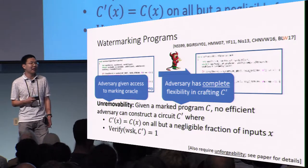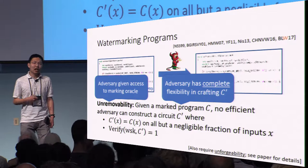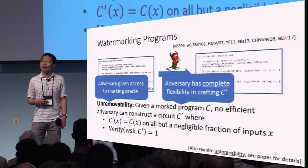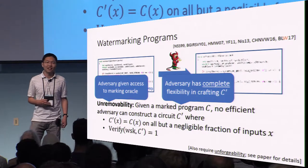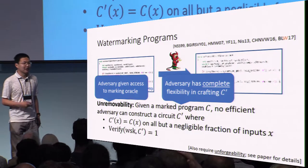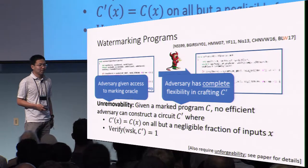There is a third property that we require called unforgeability. In the interest of time, I will not define this precisely and I'll refer you to the paper if you're interested in that additional property.